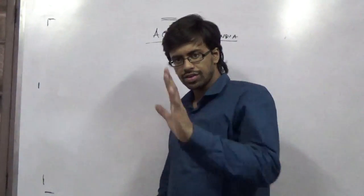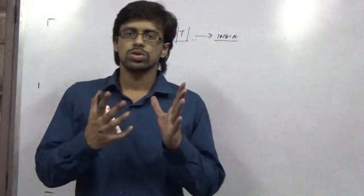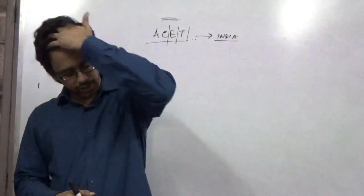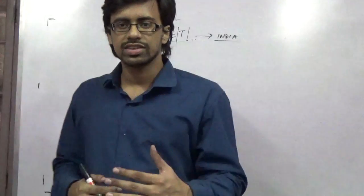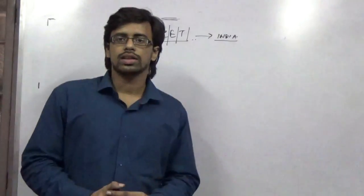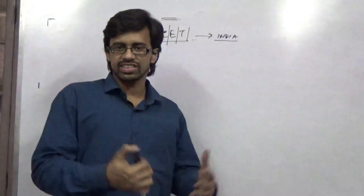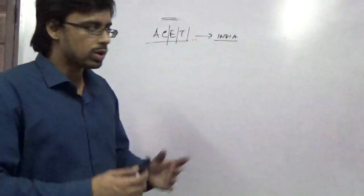So what happens in this Actuarial Science Entrance Test? It is a 100 marks examination. They take 3000 rupees as a fee, and if you crack the examination you get to give the other examinations like the core technical level examination papers.